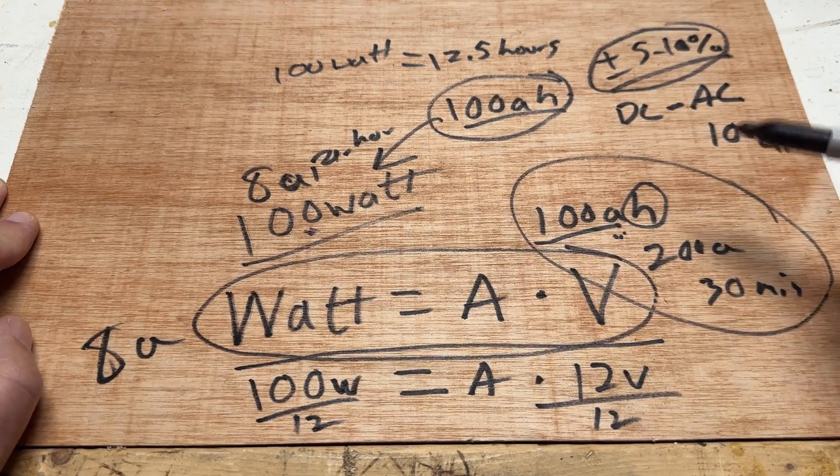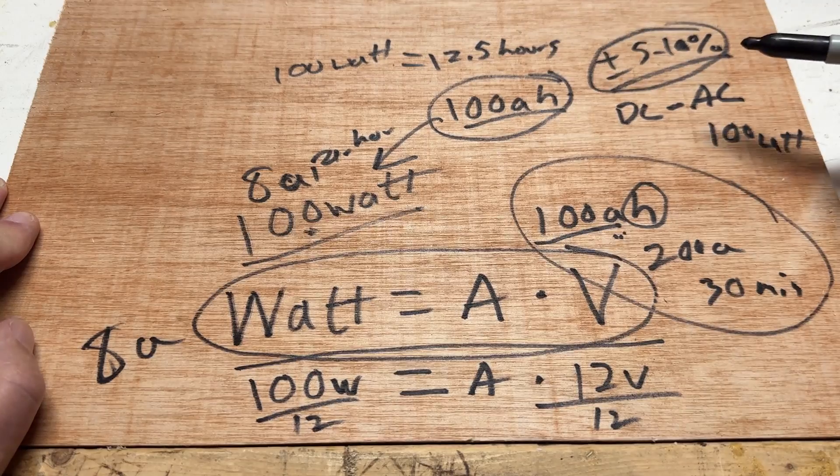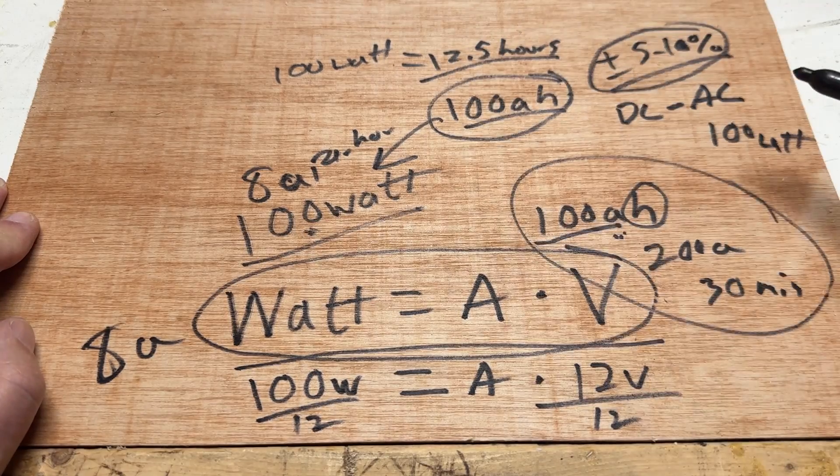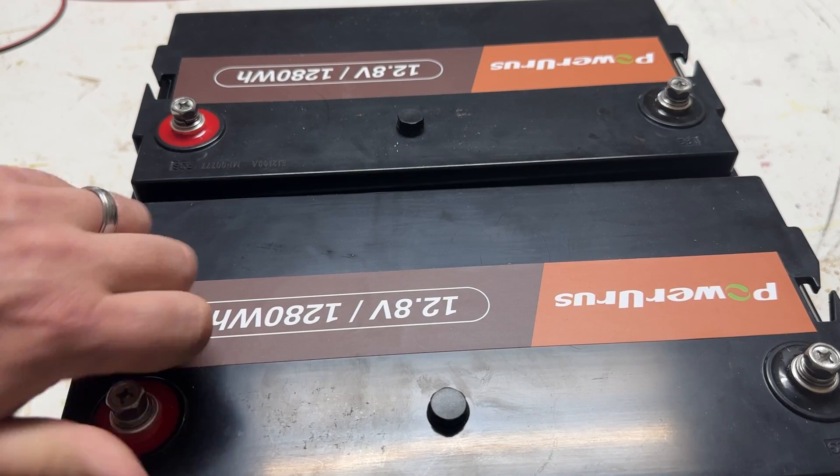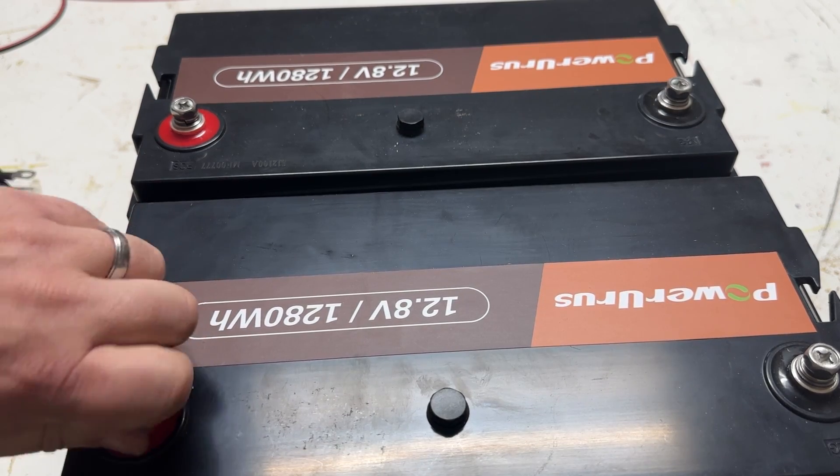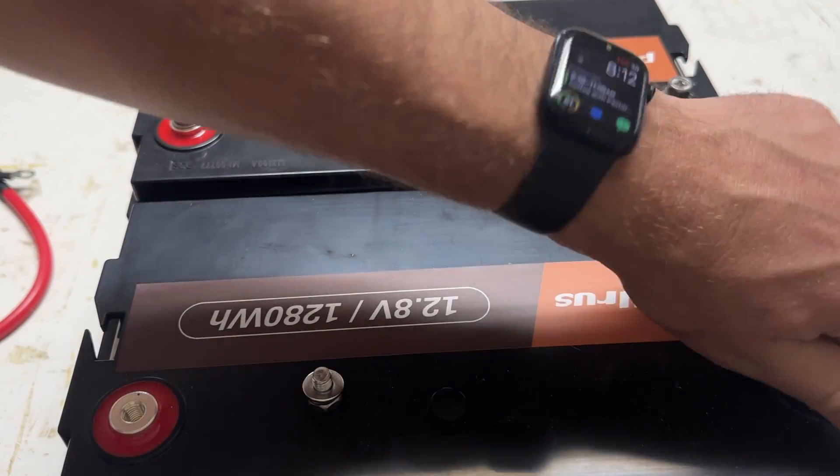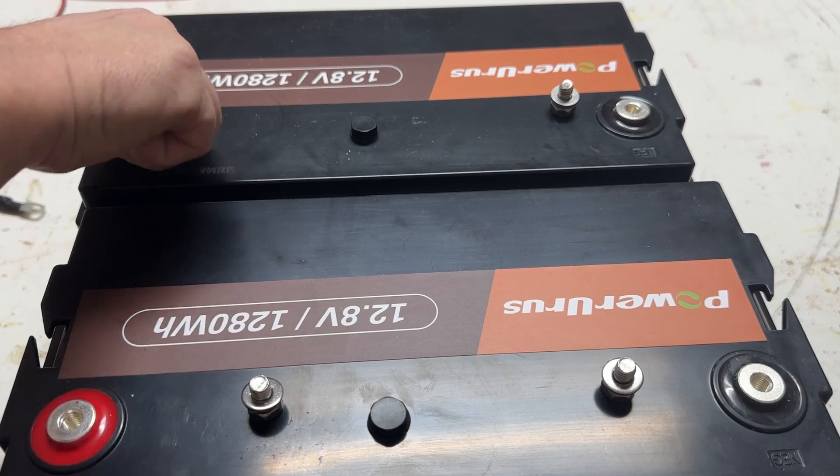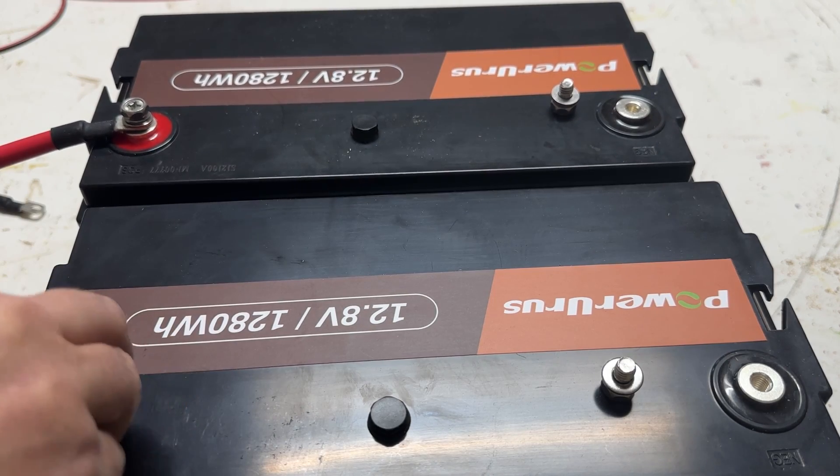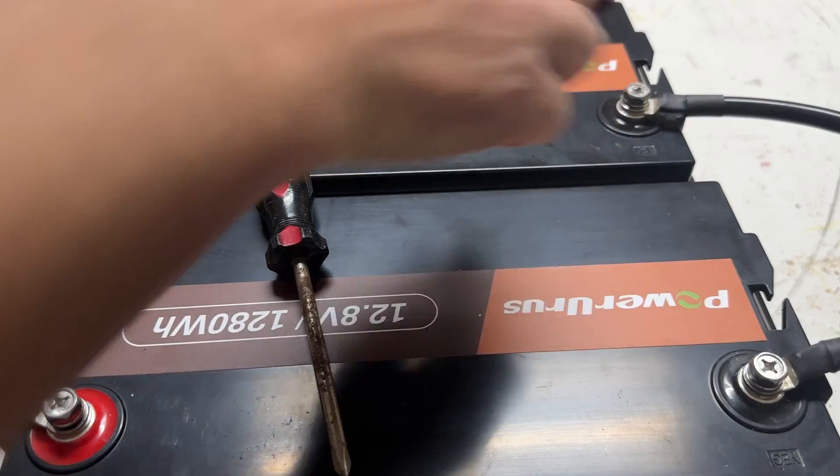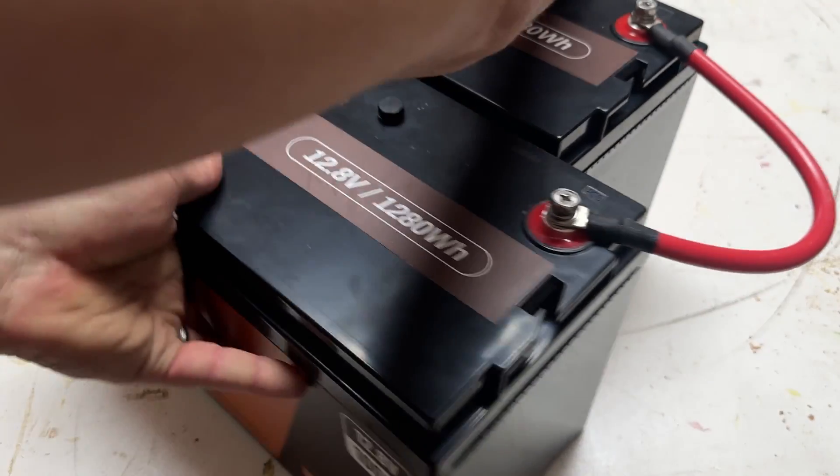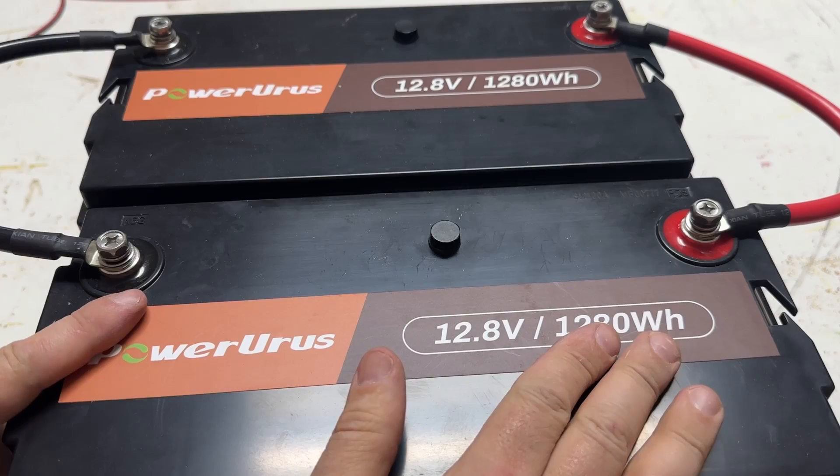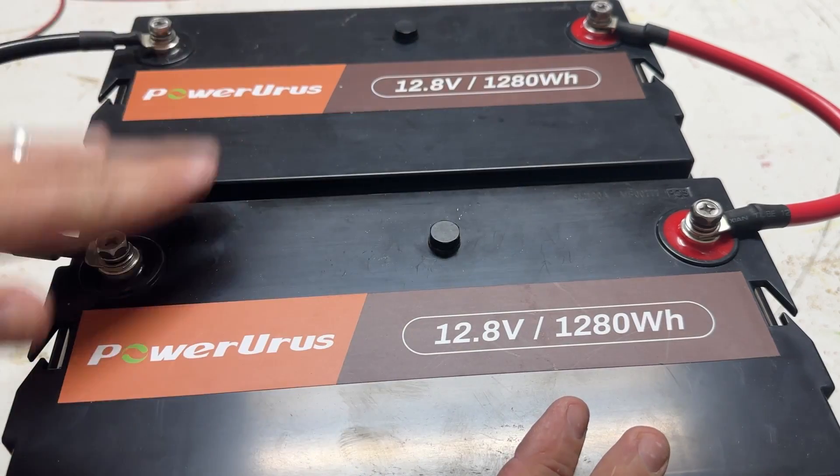So you're converting your DC power from your battery to AC power, and then you're running your 100-watt light bulb. Now let's say we need to run our 100-watt light bulb for longer than 12.5 hours. What can we do? Let's say we want to double our capacity. What you're going to do is you're going to tie two batteries together in parallel. You're going to connect your positive to your positive, and your negative to your negative.